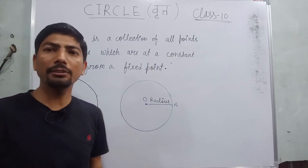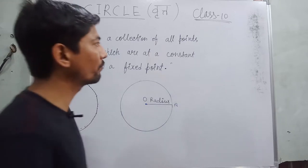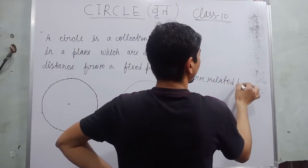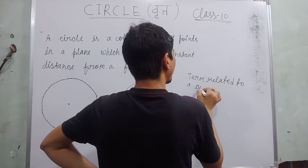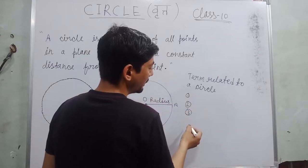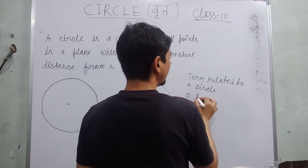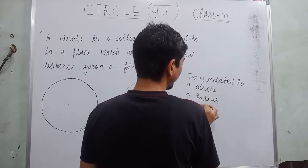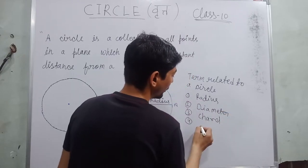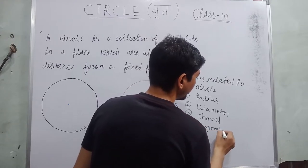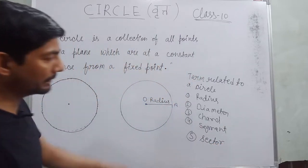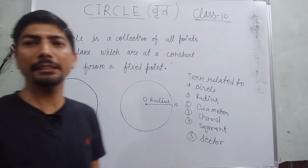Now we are going to discuss various terms related to a circle. There are various terms related to a circle which you studied in your previous classes. The first one is radius, second one is diameter, third one is chord, fourth one is segment, and the next one is sector. Yeh aapne basically pehle se hi padh rakha hai, lekin hum thoda sa iske baare mein charcha karenge — bahut adhik charcha nahi karenge kyunki yeh is chapter ka main topic nahi hai.